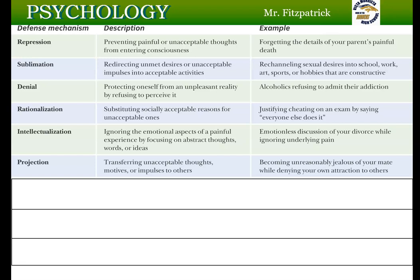Projection is when you have some unacceptable traits but, instead of accepting them, you accuse somebody else of having those traits. For example, you may be super jealous — whenever your mate talks to someone you get jealous — but when you talk to somebody and your mate asks who it was, you accuse them of being jealous. You're taking your own traits and projecting them onto somebody else.